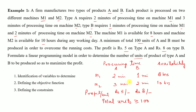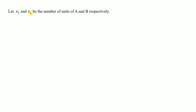Now we formulate the linear programming problem. Step 1 is identification of variables. The variables are the number of units of products of type A and B. Let x1 and x2 be the number of units of A and B respectively.